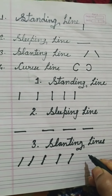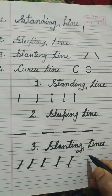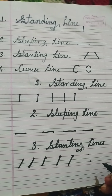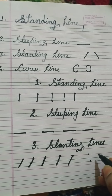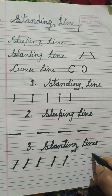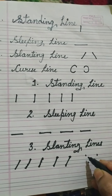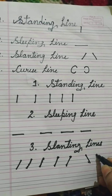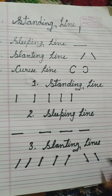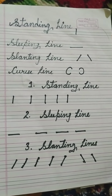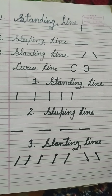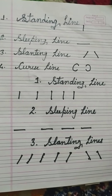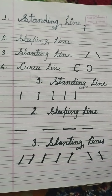Slanting line actually has two types. So you can show children this type of slanting line as well. Is tarike se dots hum rakhenge aur isko join karenge — we will place the dots this way and then join them. I hope you will understand. Good day, goodbye friends.